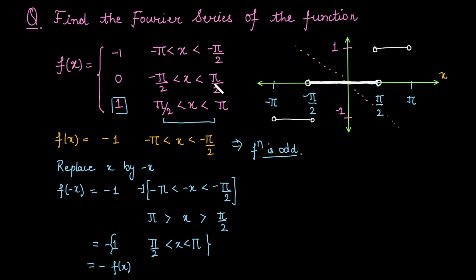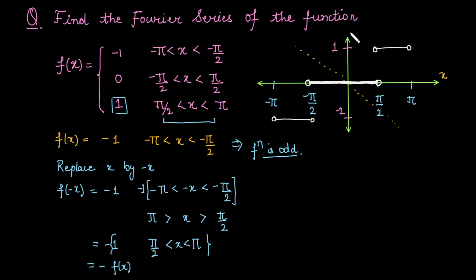The zero function is defined on a symmetric interval, and from the other piece we obtained an odd relationship. So overall the function is odd. You can also observe from the graph: the graph is symmetric about the origin — it acts like a mirror image — confirming the function is odd.